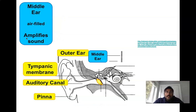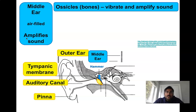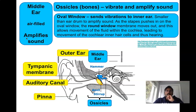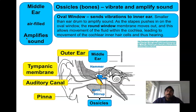The middle ear is the next section and it's also meant to amplify sounds. It's filled with air and contains those ossicles we talked about — those really small three bones. The ossicles vibrate and help amplify that sound. The oval window sends vibrations to the next section, the inner ear, and it's smaller than the eardrum and also helps to amplify the sound.